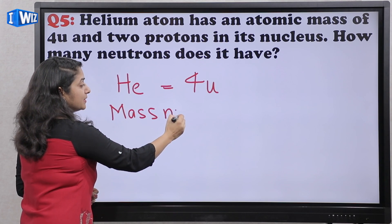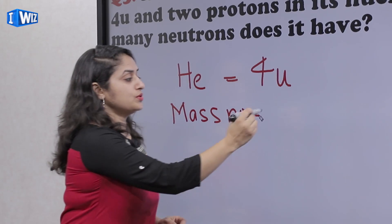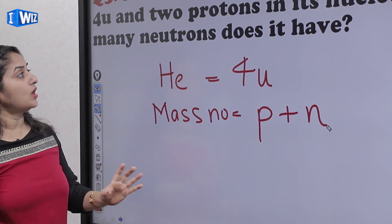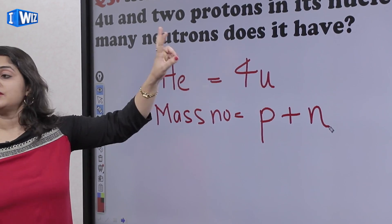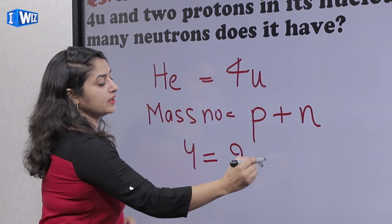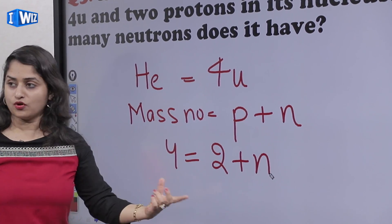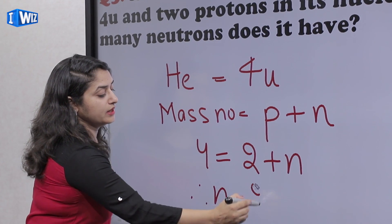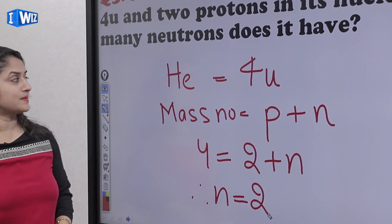Aur jo mass number hai, woh banta hai protons plus neutron se. Toh agar usne kaha ki uske paas 2 protons hai, that means mass number 4 hai, protons 2 hai, toh neutrons kitne honge? 4 minus 2. Toh aapke paas helium atom mein hoongi two neutrons.